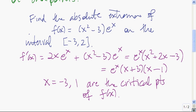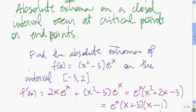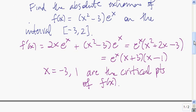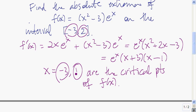Because absolute extrema of a function on a closed interval can only occur at critical points or endpoints, the only thing we need to do is take a look at this endpoint, this endpoint, this critical point, and this critical point — and see which of these yields the highest function value and which yields the lowest function value.